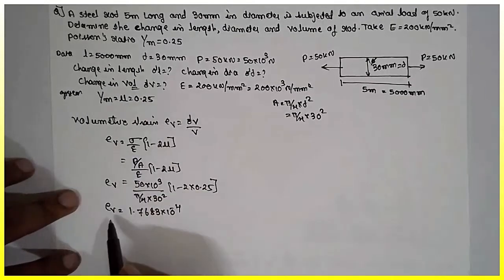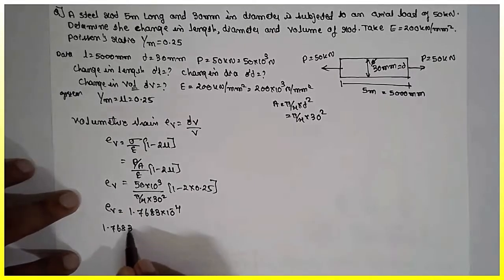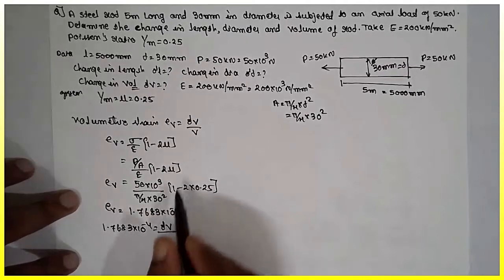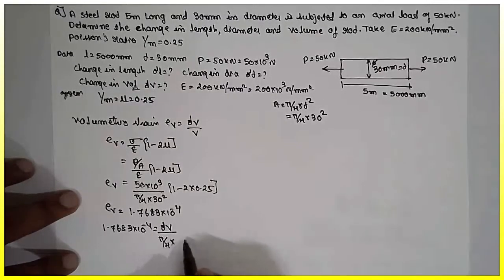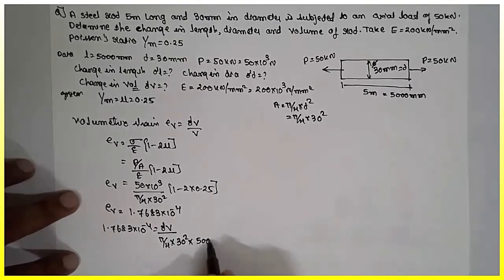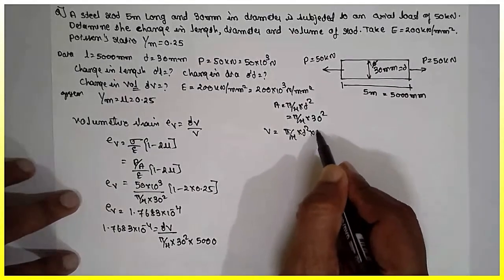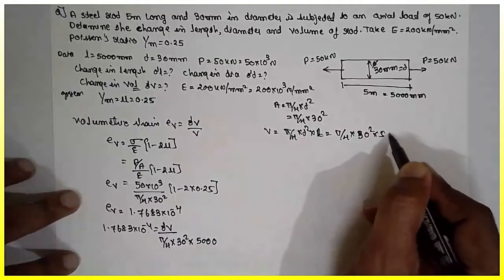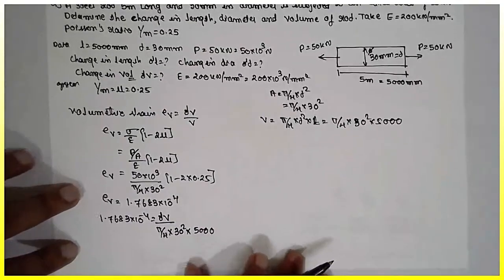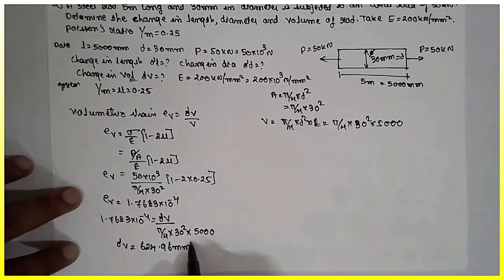Now we have to find out the change in volume. Substituting into the formula: 1.7683 × 10⁻⁴ = delta V / V. Volume of the cylinder is pi/4 × D² × L = pi/4 × 30² × 5000. Cross multiplying, you will get delta V in mm³.